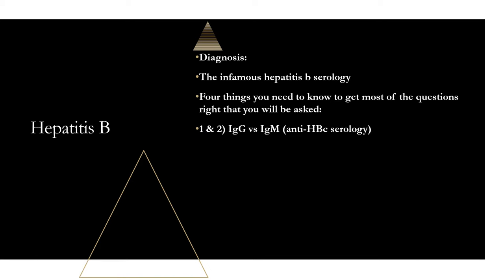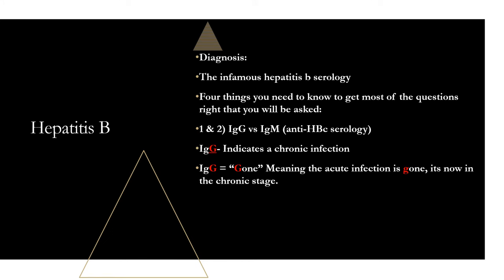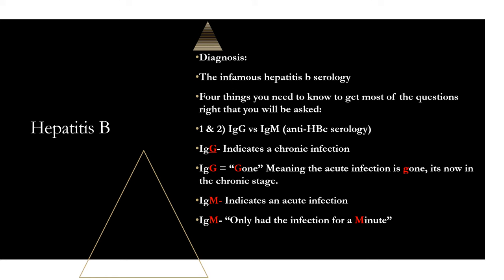First, know the difference between IgG and IgM under the anti-HBc serology. IgG indicates a chronic infection — remember, the G stands for 'gone,' meaning the acute infection is gone and now it's in the chronic stage. IgM indicates an acute infection — remember, you've only had the infection for a 'minute.' So IgG equals chronic, IgM equals acute.